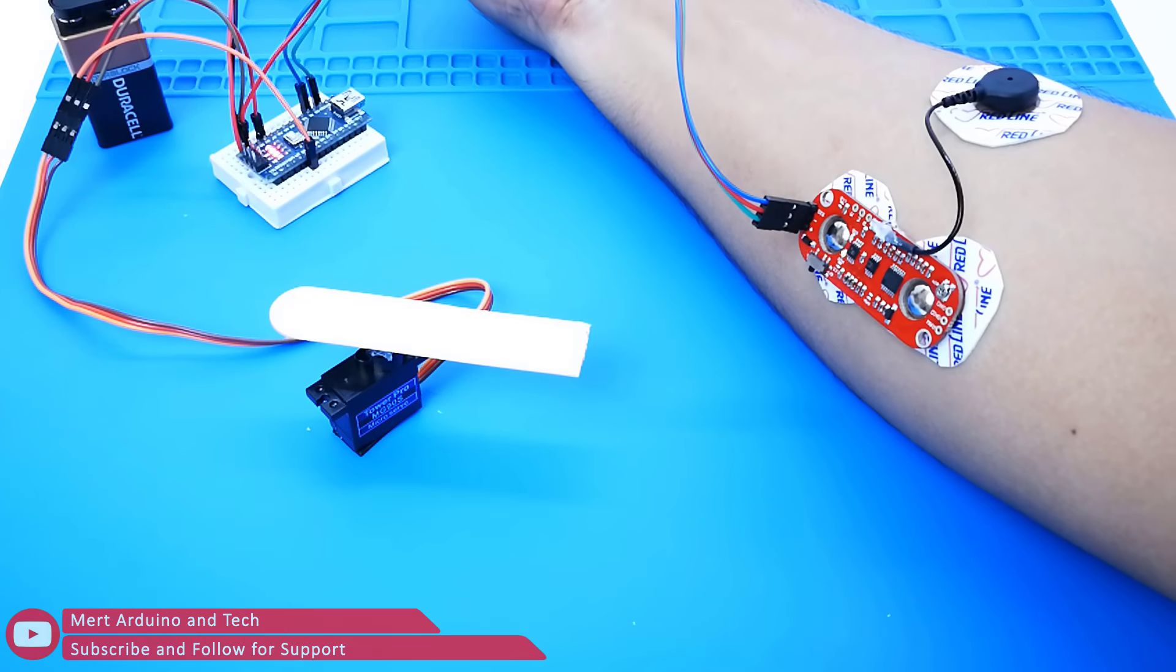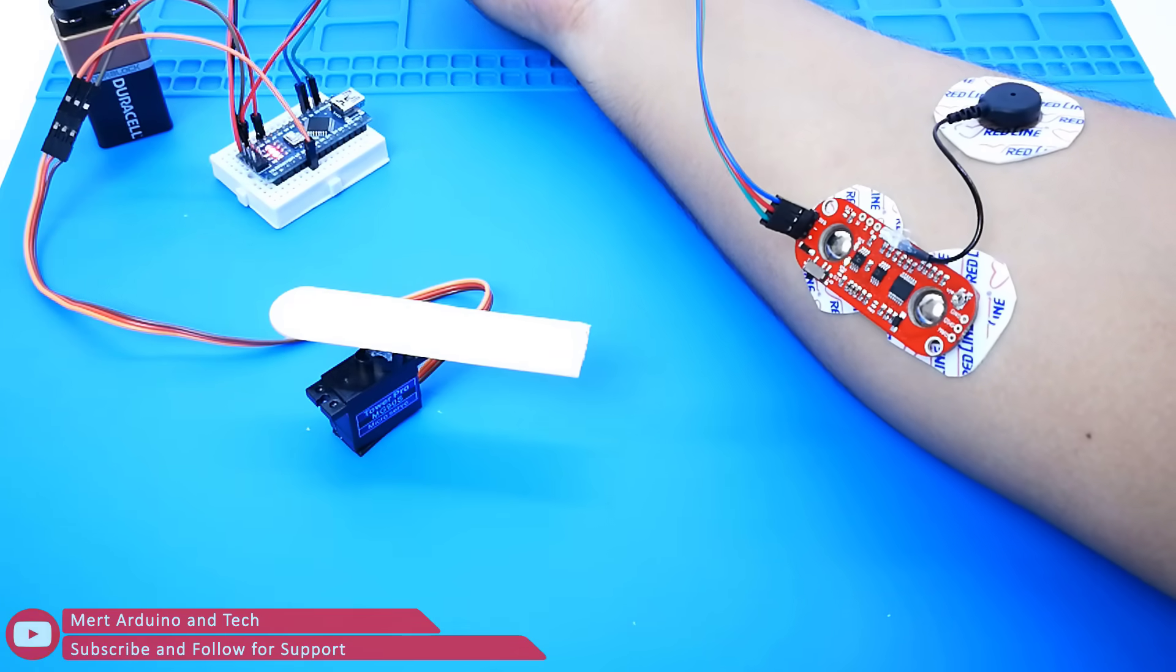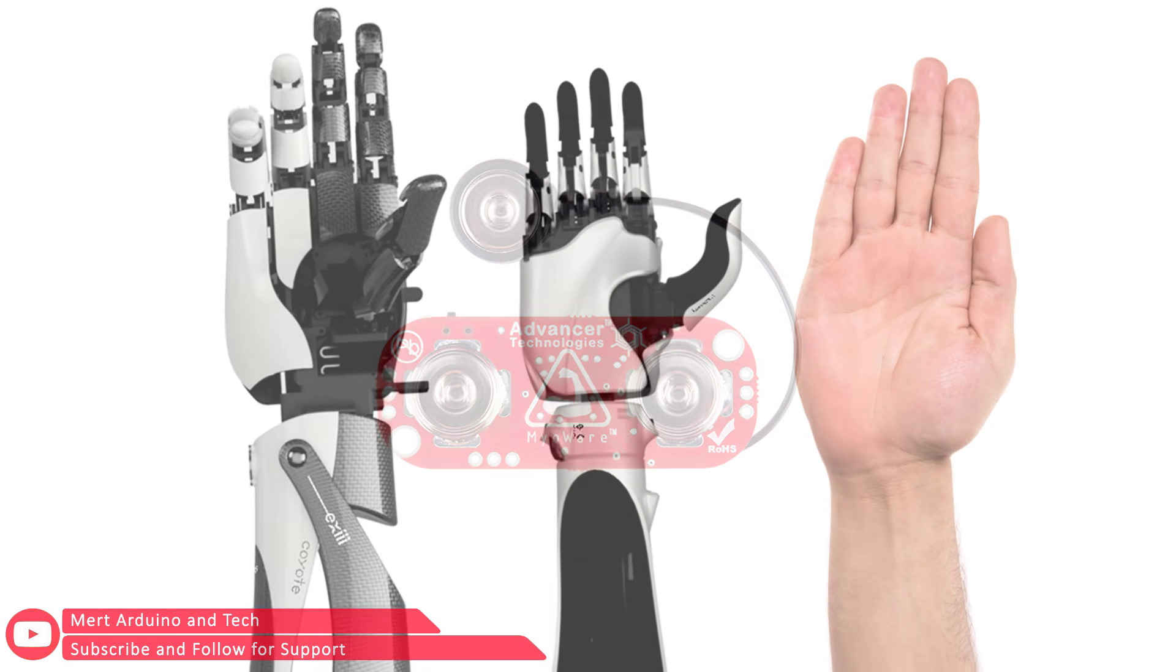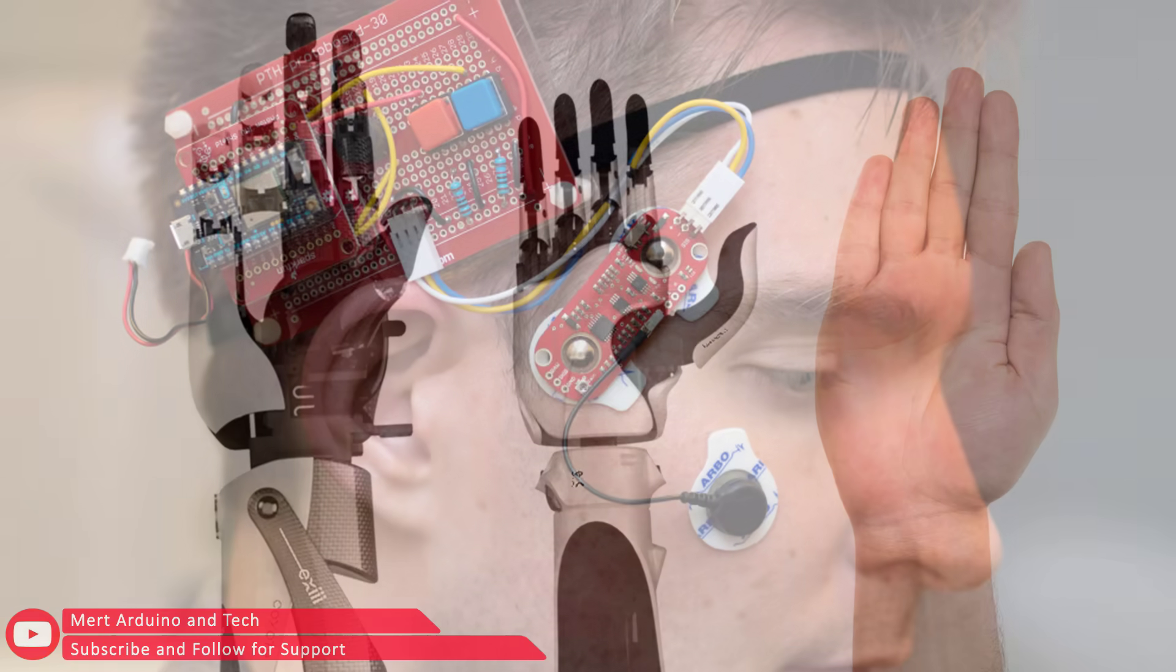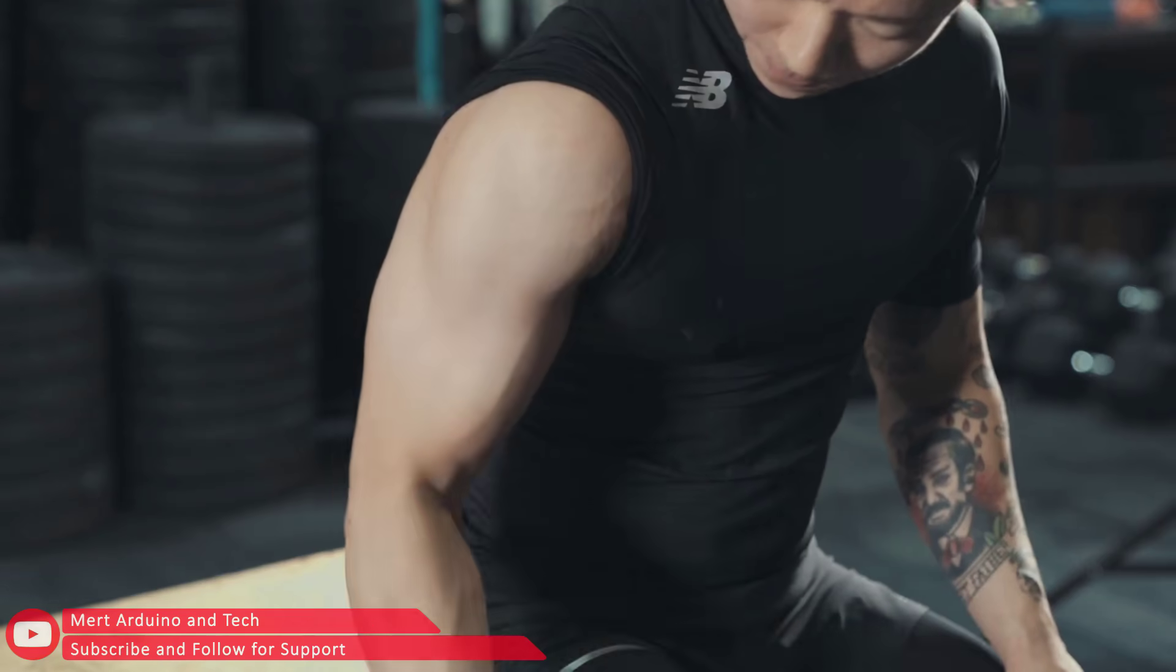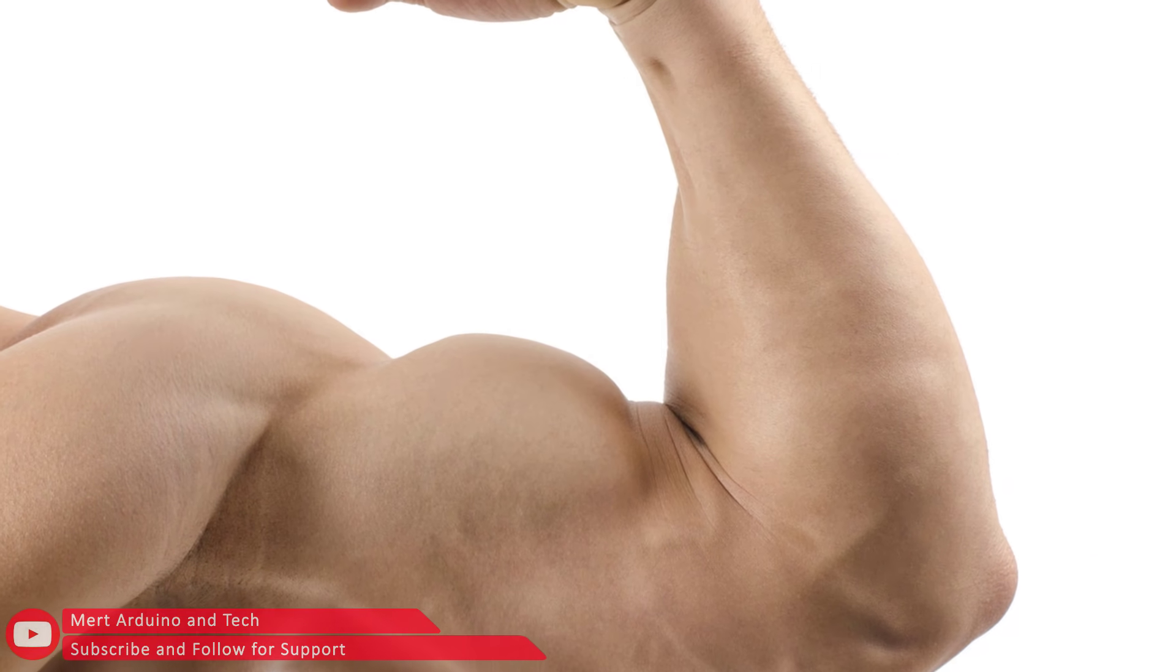Hi everybody, today we will learn how to use the MioWare muscle sensor and control a servo motor. So with this sensor you can control a robotic hand, or you can use your muscles to control anything. Using our muscles to control things is the way that most of us are accustomed to doing it.